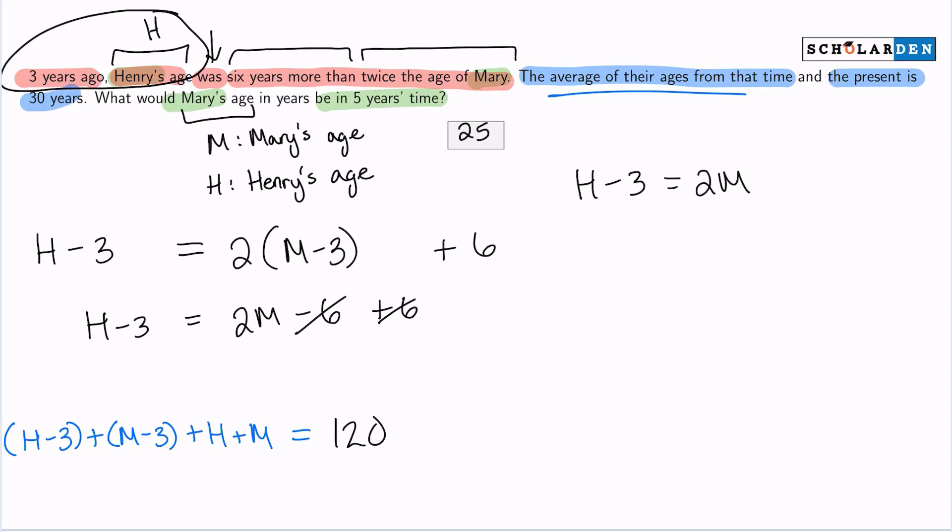I can actually get H by itself here. Adding three to both sides, I can get H equals two M plus three. So that's the relationship we have. Henry is three more than twice the age of Mary.